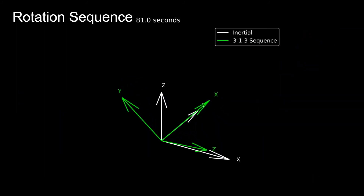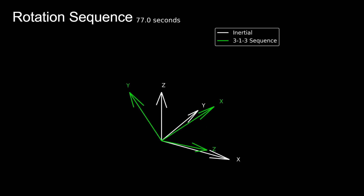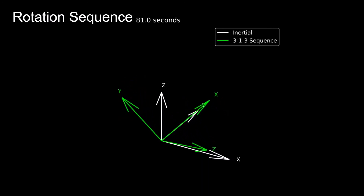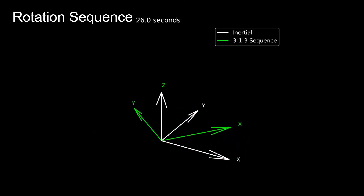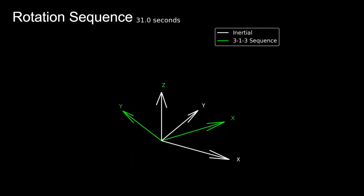These rotations can be done in sequence to describe how frames are oriented with respect to each other — very useful for describing a spacecraft's body reference frame relative to the Earth-centered inertial or Earth-centered Earth-fixed frame. One of the most common examples is the 3-2-1 (or Z-Y-X) Euler angle sequence, where 3 corresponds to Z, 2 to Y, and 1 to X, performed in that order: first Z, then Y, then X.